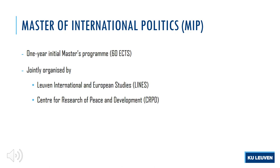The Master of International Politics is a one-year initial master's program of 60 ECTS. It is a program jointly organized by two research units at the Faculty of Social Sciences at KU Leuven. The first is called Leuven International and European Studies, or in short LINES, which is an institute for the study of international politics and European affairs at KU Leuven. Researchers there are political scientists and scholars of international relations.